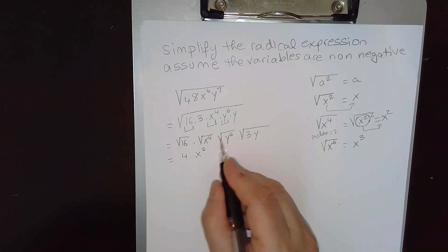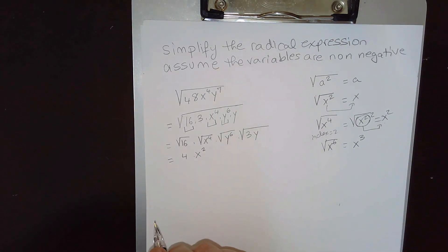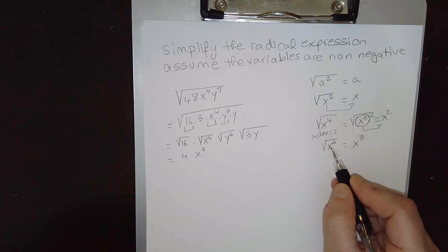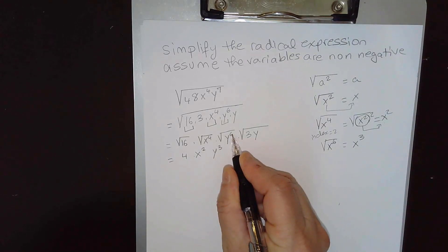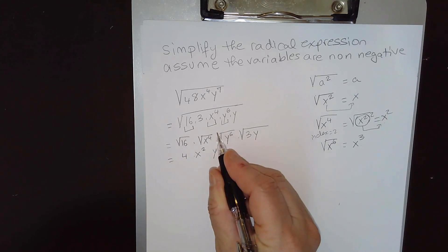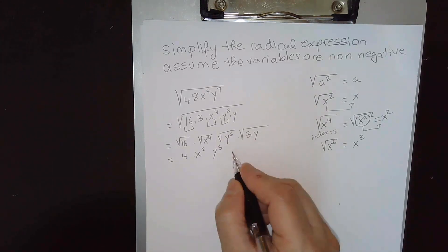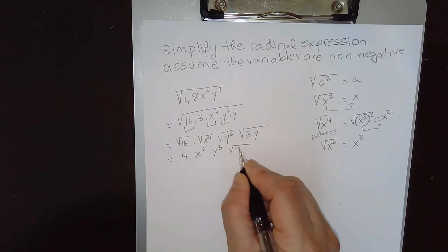And square root of y⁶, that will give me y³. I use a different variable, but that will give me y³. Now remember, the power divided by the index 6 divided by 2 is 3. And this does not come out square root of 3y.